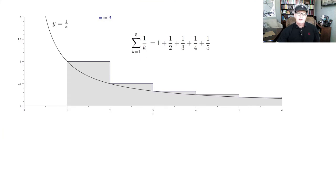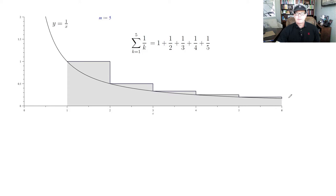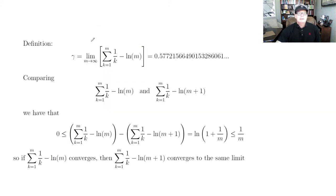To look into gamma, we start with the graph of the sum of reciprocals of the first five integers: 1 + 1/2 + 1/3 + 1/4 + 1/5. We can think of this as the area under a step function. The actual definition of gamma involves this harmonic series minus log m. The harmonic series diverges, but if you subtract log of m, what remains converges to the constant we call gamma.